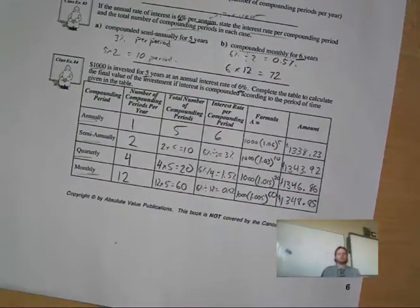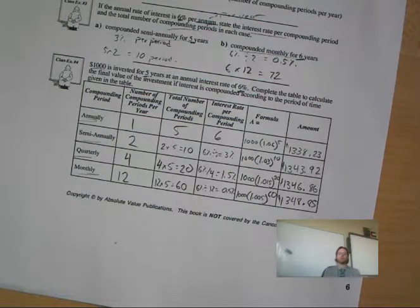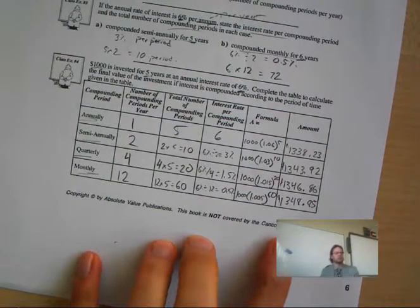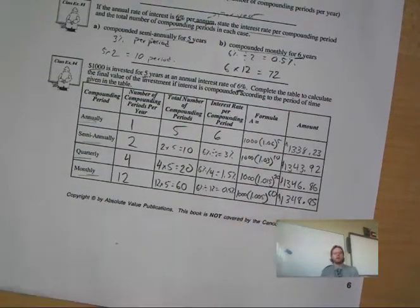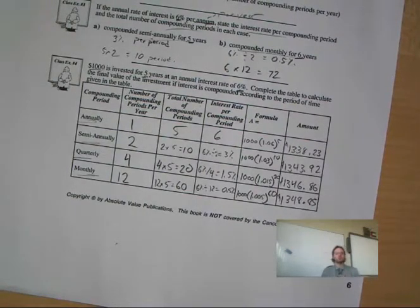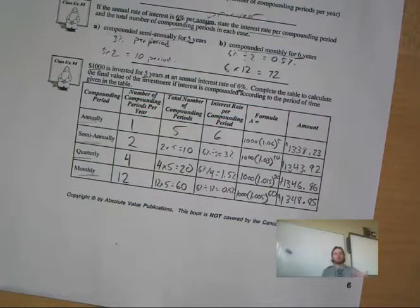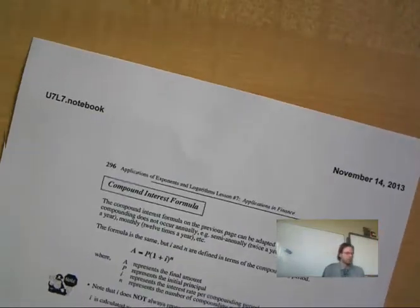Which one of these is bigger and why? What was your prediction? I want you to think about that and be able to explain which one makes more money. If you are putting your money in a bank, do you want to compound it quarterly, annually, or monthly if the percentage is the same? Be able to explain why and the logic behind it.